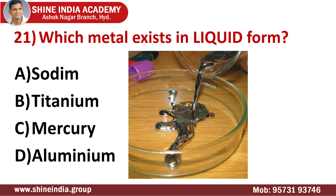Chemistry section. Question number twenty-one: which metal exists in liquid form? The answer is mercury. The metal which exists as a liquid at room temperature is mercury. The non-metal which exists as a liquid at room temperature is bromine. Metals like calcium, aluminum, and titanium are generally solids at room temperature. There are six liquid elements in the total periodic table out of 118: cesium, rubidium, francium, gallium, bromine, and mercury. Mercury is the densest liquid on earth and is also called quicksilver.